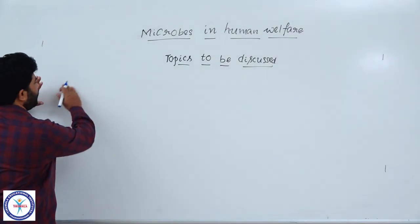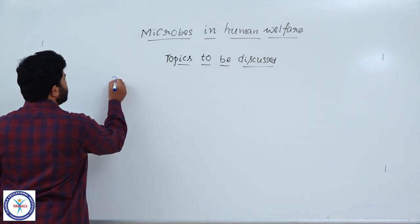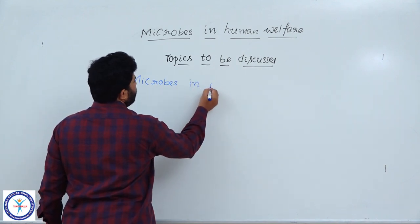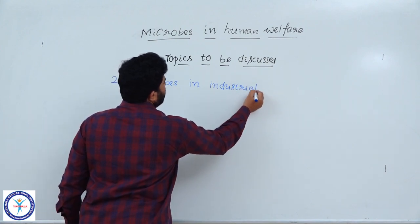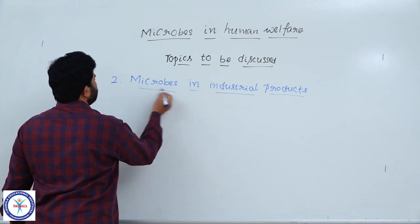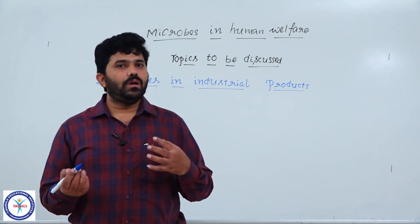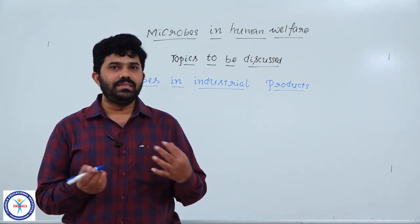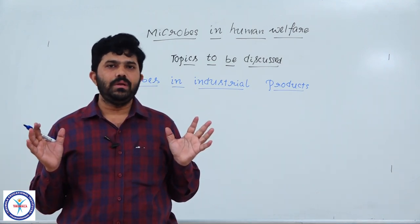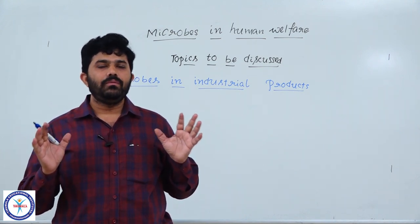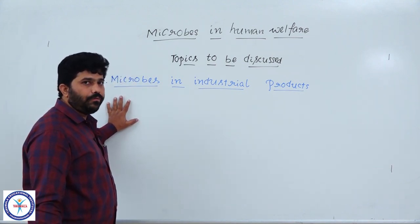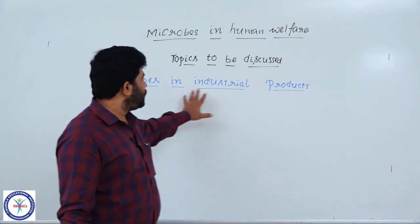Next, we are discussing another subtopic of microbes in human welfare — microbes in industrial products. Various microbes are used in the production of chemicals, alcohol, some enzymes, and some bioactive molecules. We require these products not in small amounts but in large amounts, so we need very big industries to produce all those products at large scale using microbes.